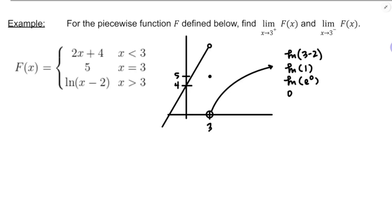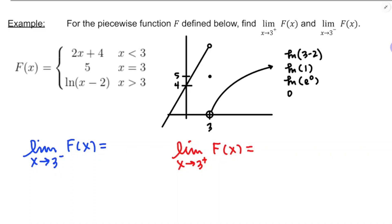We're interested in finding the one-sided limits of f as x approaches 3. Starting with the left-hand limit as x approaches 3 from the negative side — the graph is getting closer to this open circle. The y-coordinate of the open circle: plug in x equals 3 to 2x plus 4. That gives 2 times 3 plus 4, which is 10. So the left-hand limit equals 10. Then approaching from the right along the natural log piece, y is getting closer and closer to 0. So the limit as x approaches 3 from the positive side equals 0.